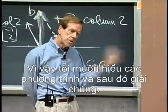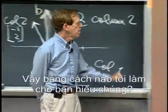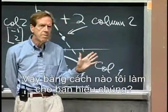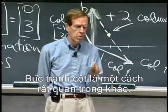So I want to understand the equations and then solve them. How do you understand them? The row picture is one way, the column picture is another very important way.